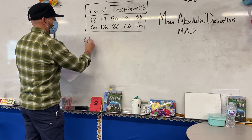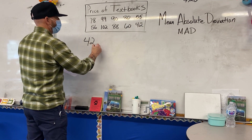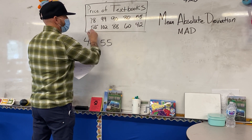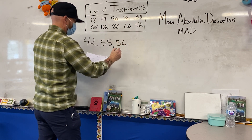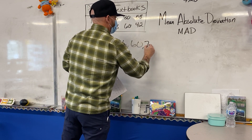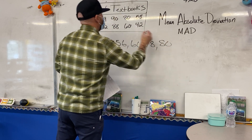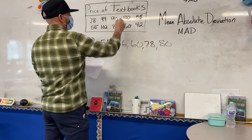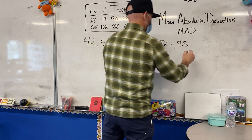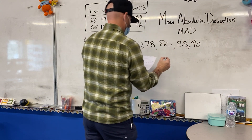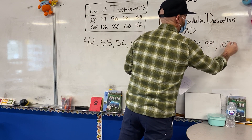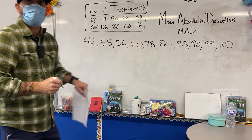So I've got 42 — we want to make sure we're taking care of each of the data values. 55, 56, 60, 78, 80, 88, 90, 99, and 102. We see 102 in there, okay?